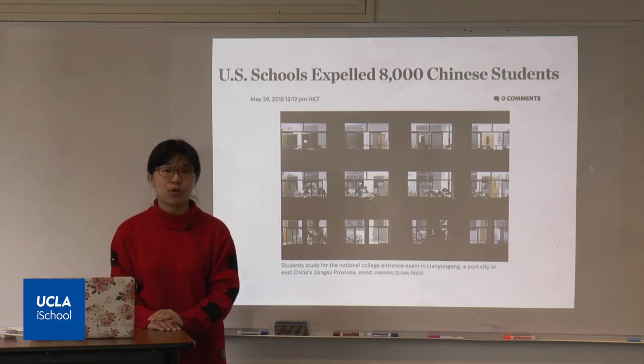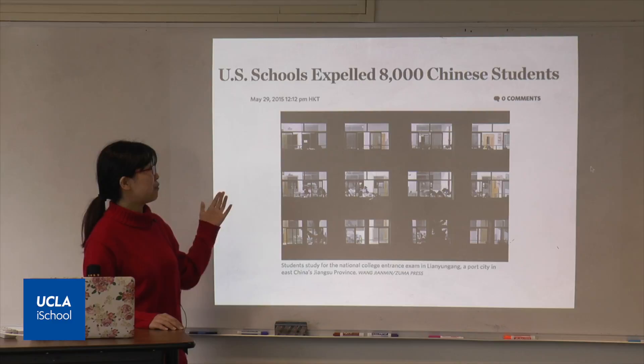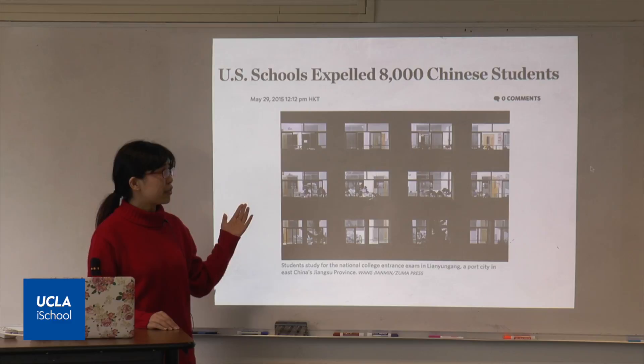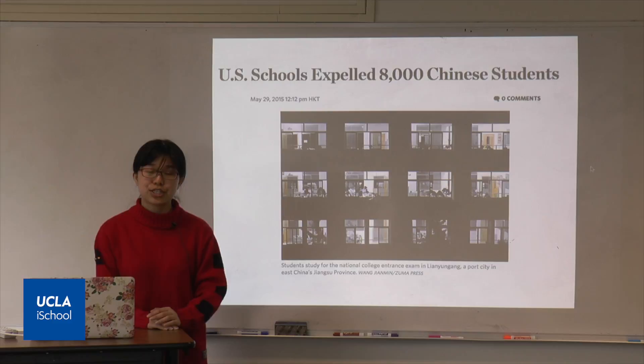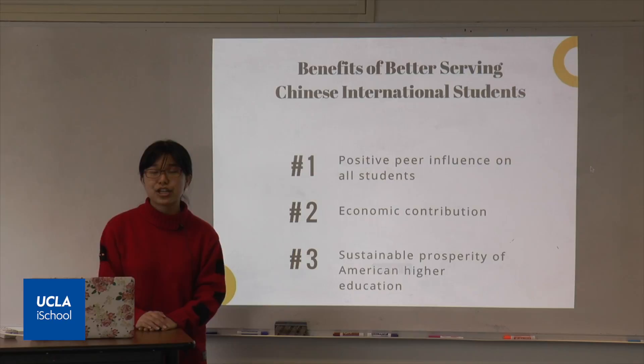I was even more surprised to discover that there are serious problems facing Chinese international students. This is a headline from 2015. You can see from this striking headline that about 8,000 Chinese students were expelled from U.S. schools. This is based on a survey conducted by my company. All those striking figures indicate serious academic problems of Chinese students, especially including their academic underperformance — meaning low GPAs leading to expulsion — and also their academic dishonesty, which basically means plagiarism.